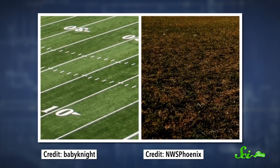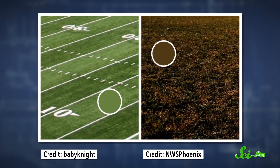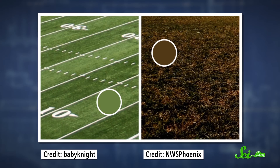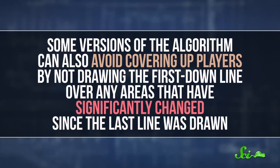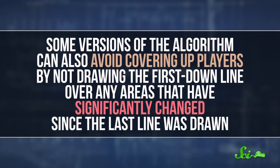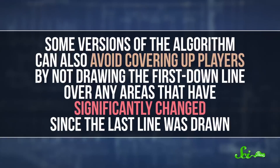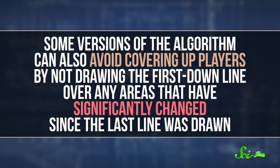Then the computers project the yellow line on top of the camera images. But instead of just replacing any pixels with yellow like they would for simpler graphics, they only replace certain colors. Generally, colors like green and brown get replaced, since they're the kinds of colors you'll find on a grassy field, but other colors get left alone. That way, the grass and dirt get replaced with a yellow stripe, but the players themselves don't, even if they walk across the line. To avoid drawing over things like green uniforms, the set of colors to be replaced has to be specific to each field and each game, which takes a lot of work and careful programming. Some versions of the algorithm can also avoid covering up players by not drawing the first down line over any areas that have significantly changed since the last line was drawn — like where a player is now standing.